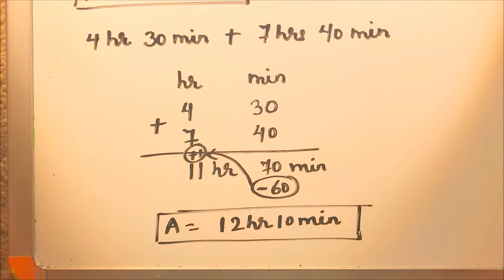Whenever we see that minutes are more than 60 minutes, so we will subtract 60 from the minutes side and we will add 1 to the hours side. This is how we add time.